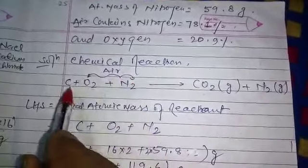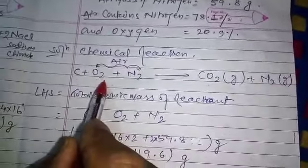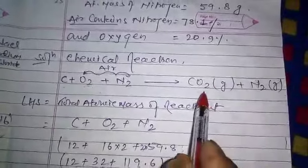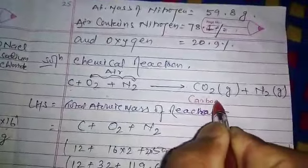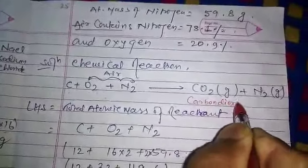So carbon and oxygen, when they react, then carbon dioxide gas will form, CO2, carbon dioxide gas. And along with that, nitrogen gas is released.